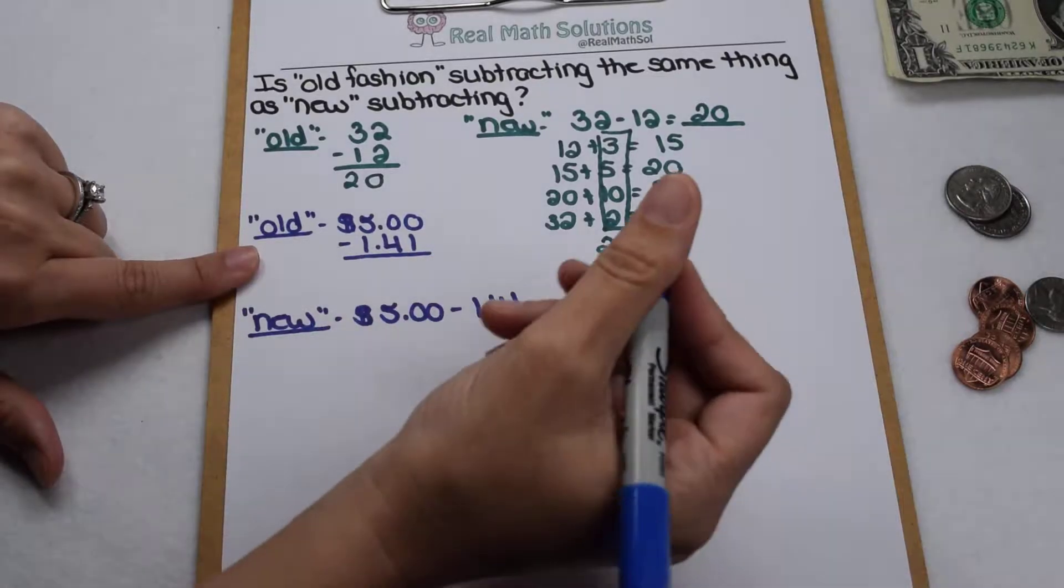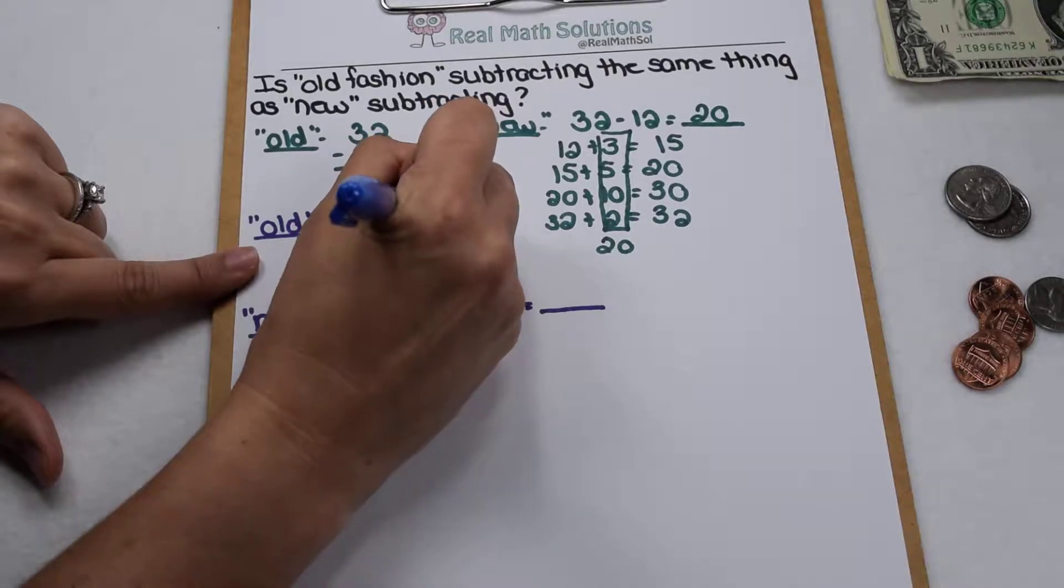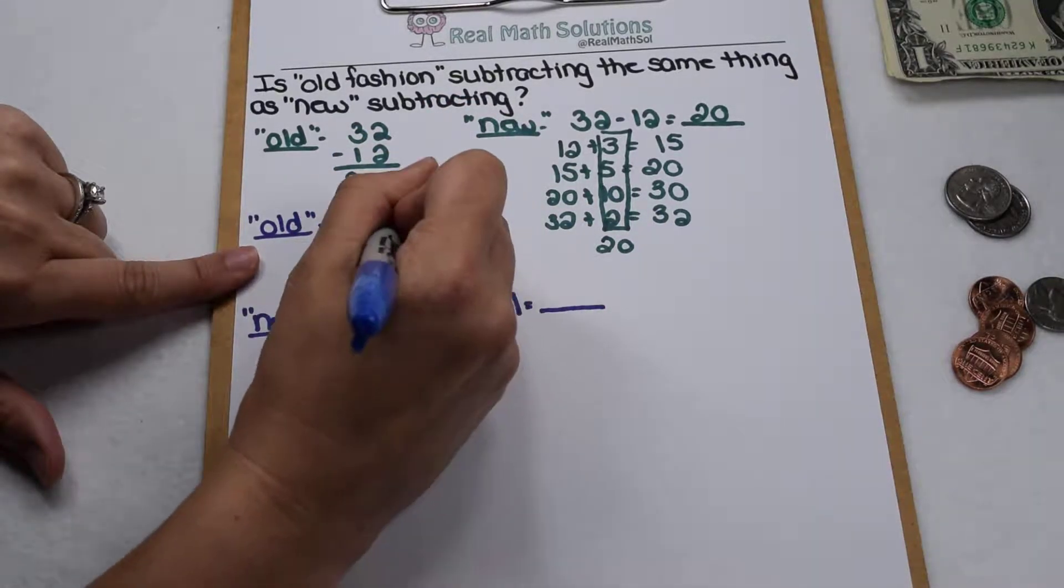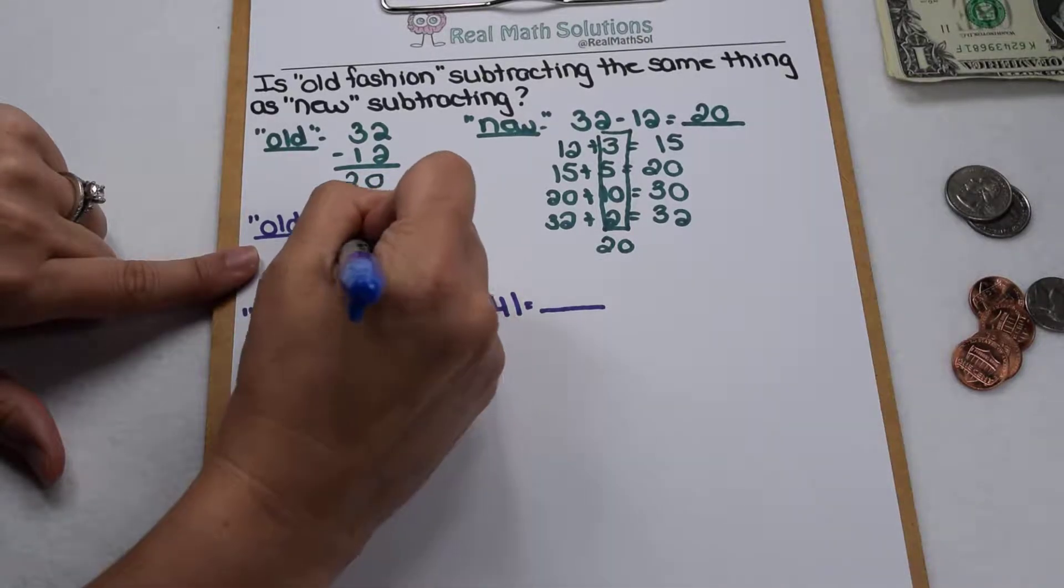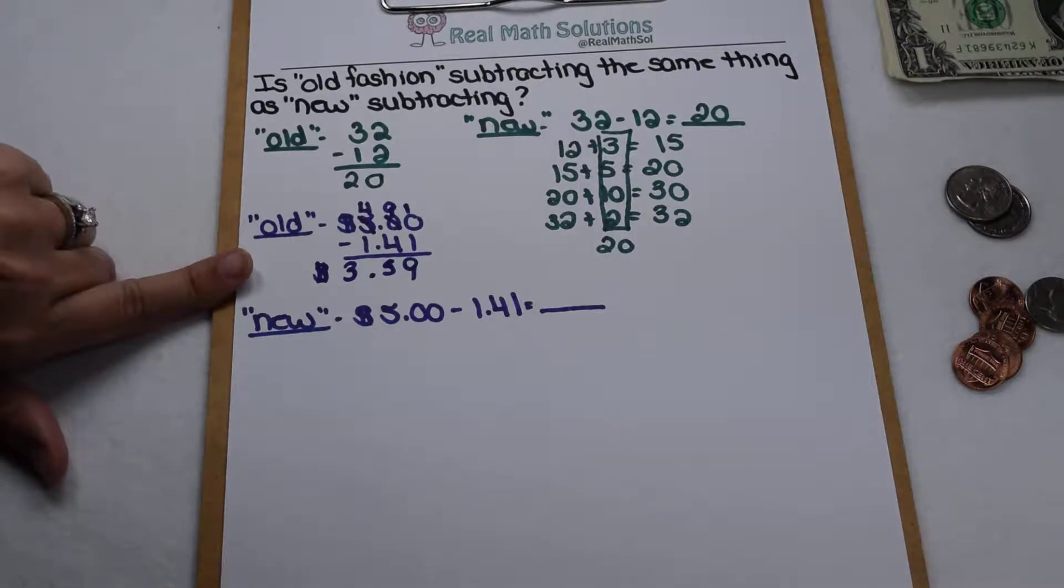If we did it the more old-fashioned way that most of us were taught, that would involve a lot of borrowing. So when I would do that, when I borrowed, 10 minus 1 would give me 9, 9 minus 4 would give me 5, 4 minus 1 would give me 3, and we would give them change of $3.59.